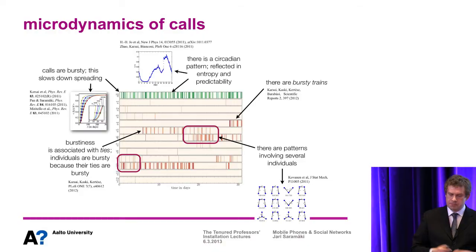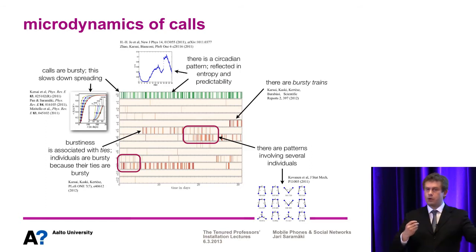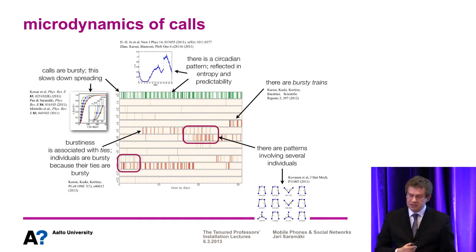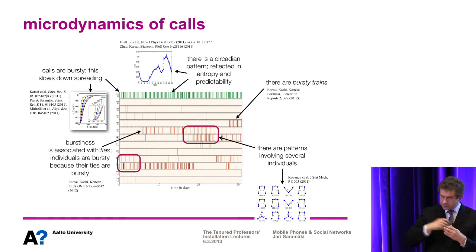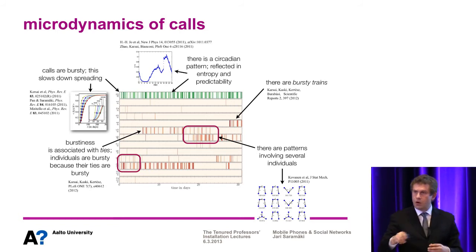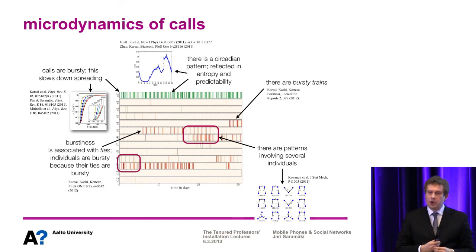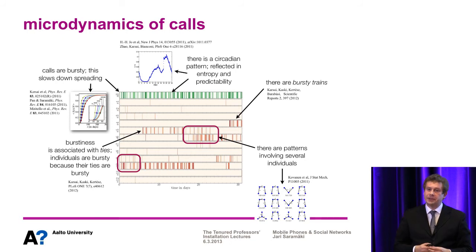First, there is burstiness in calls. In layman's terms, people normally don't call their friends every day or uniformly randomly. Rather, people's call behavior is such that you typically call someone two or three times in a row in very quick succession, then there's a long period of silence, then again a rapid burst of calls within a short timeframe, then silence again. This is a very inhomogeneous and uneven pattern of communication, and it appears to be intrinsic to how humans communicate via any electronic media. I would say that no one really understands exactly why this is the case as of yet.